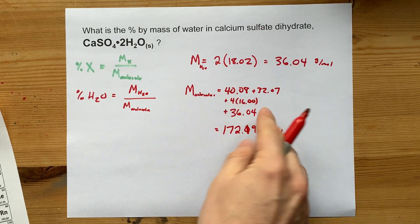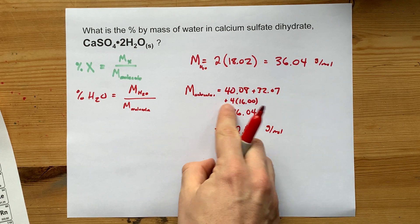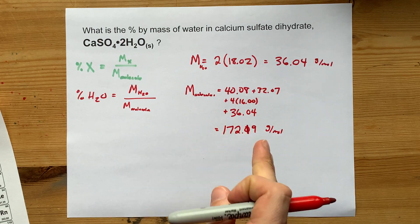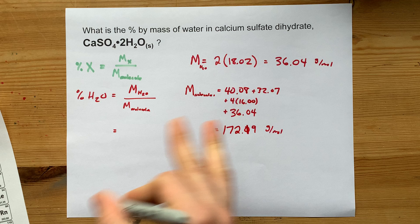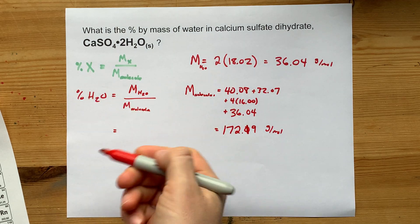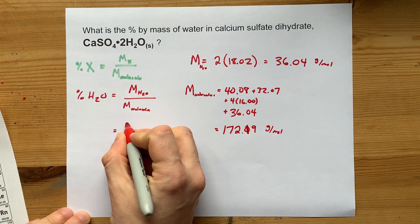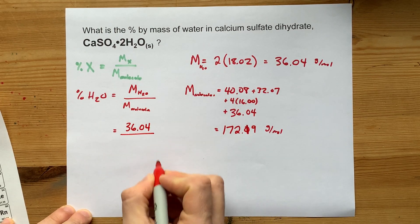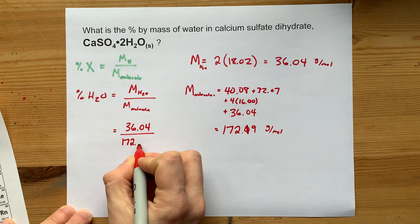36 of it was contributed by water. This calcium wasn't water, this sulfur wasn't water, and these oxygens weren't water. Only this 36.04 was. And so, having seen that, maybe it makes sense that the fraction of the molecule that is water is that 36.04 contribution out of the entire molecule combined.